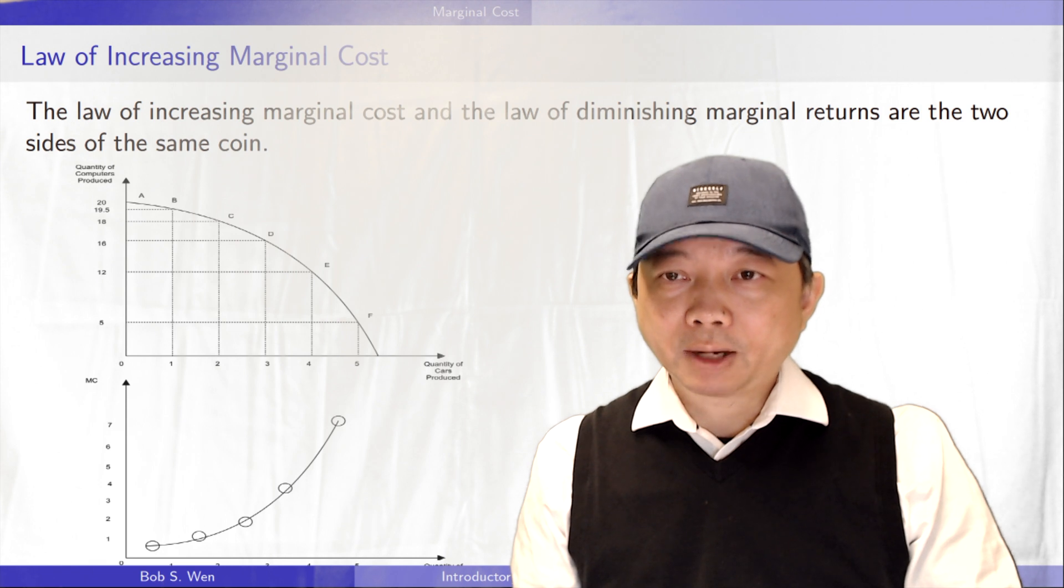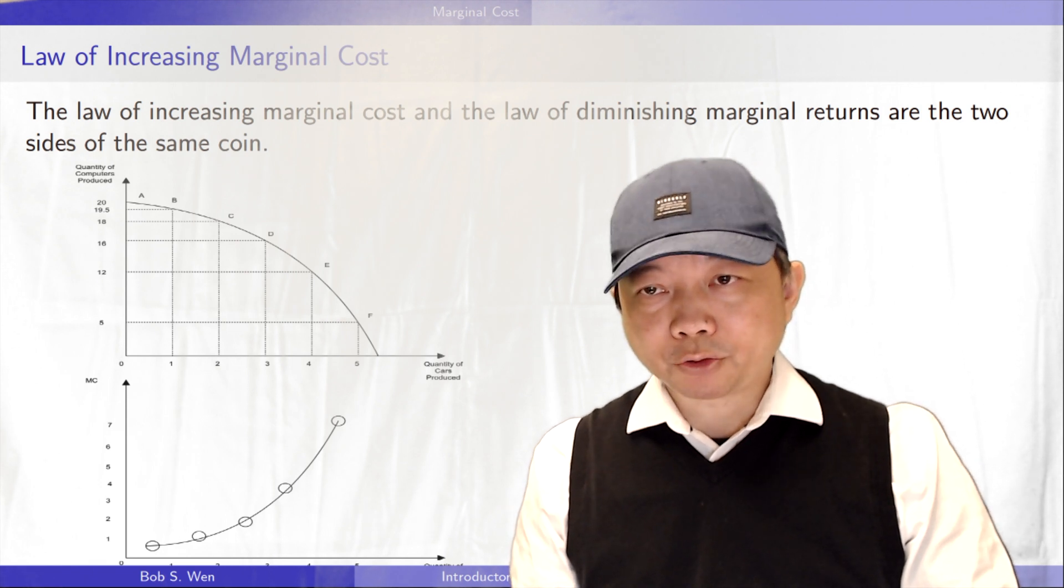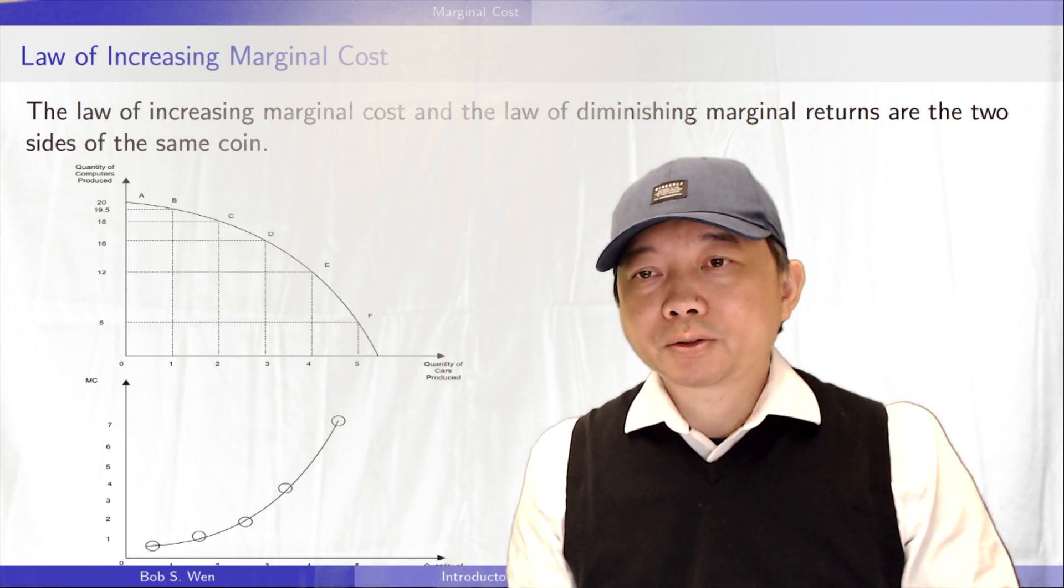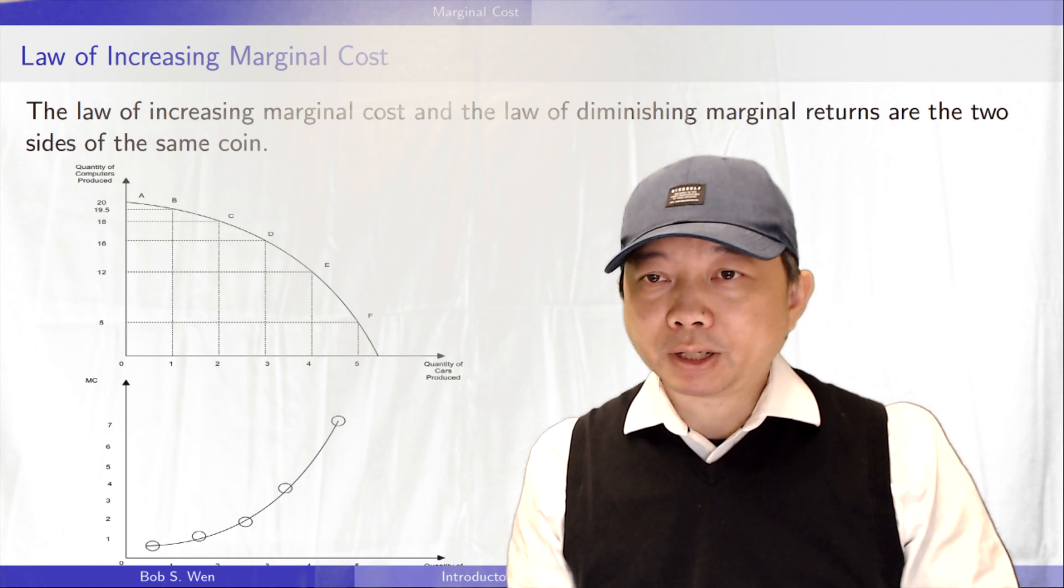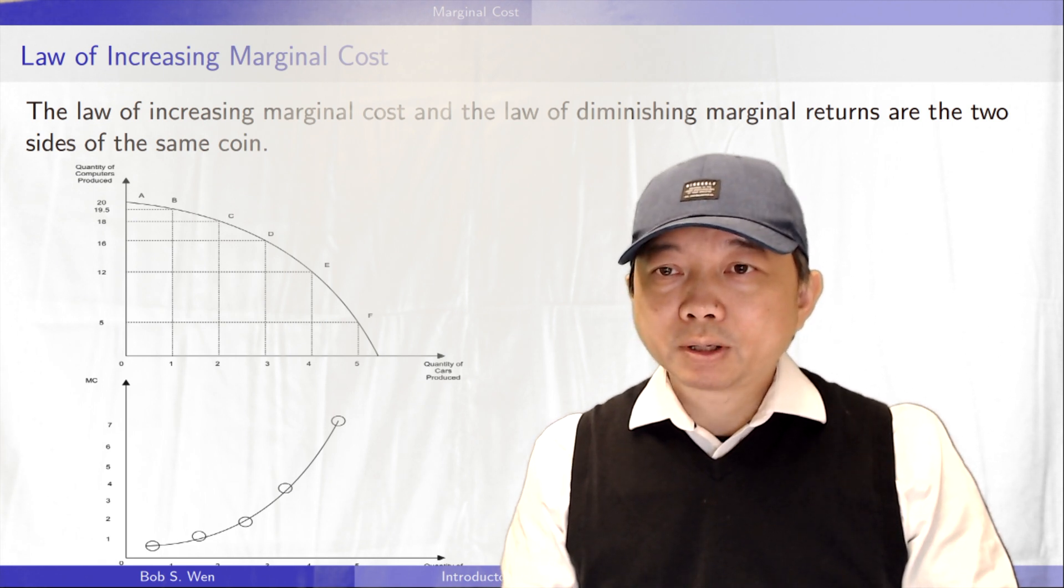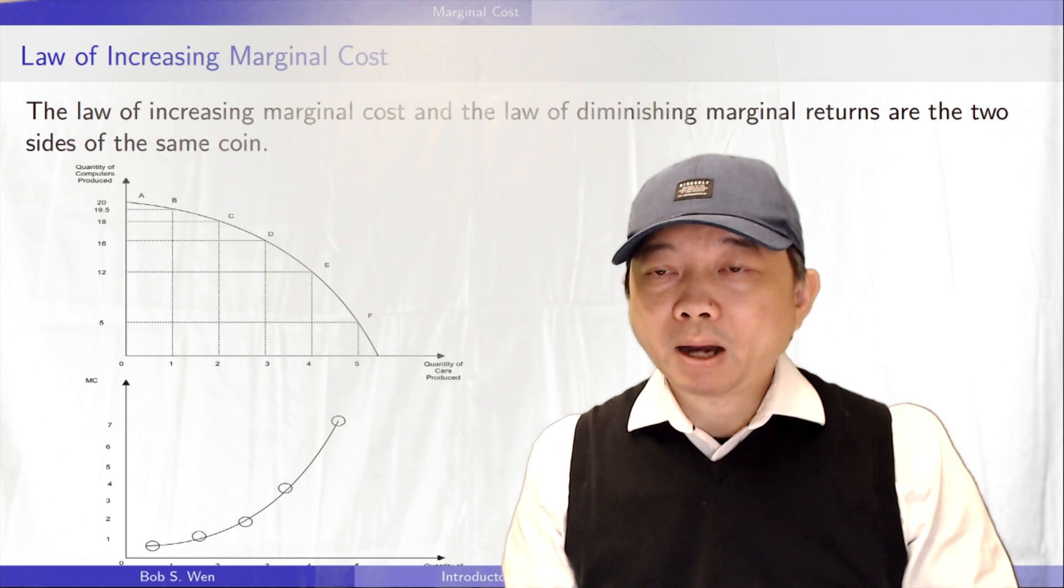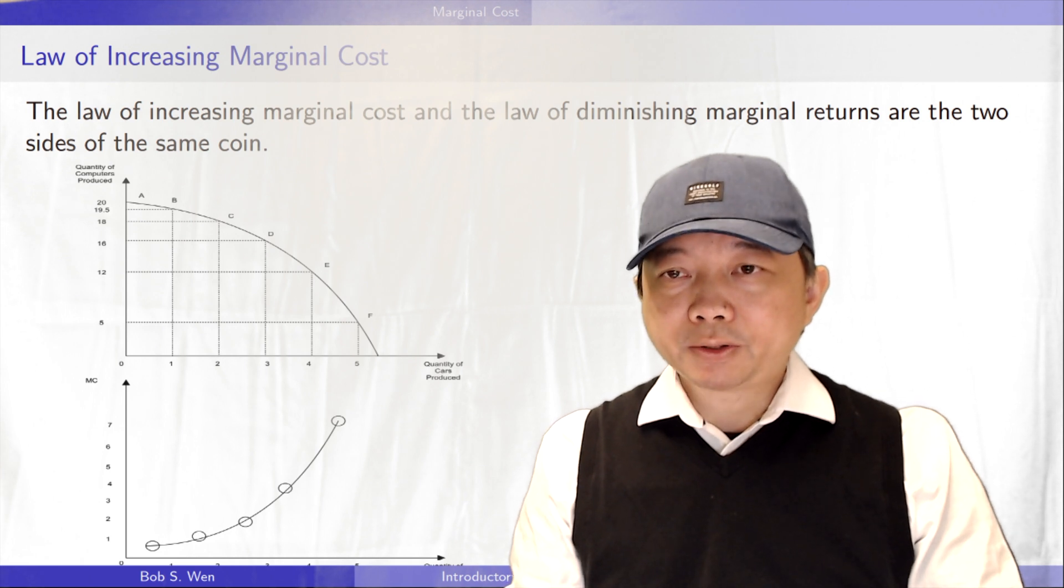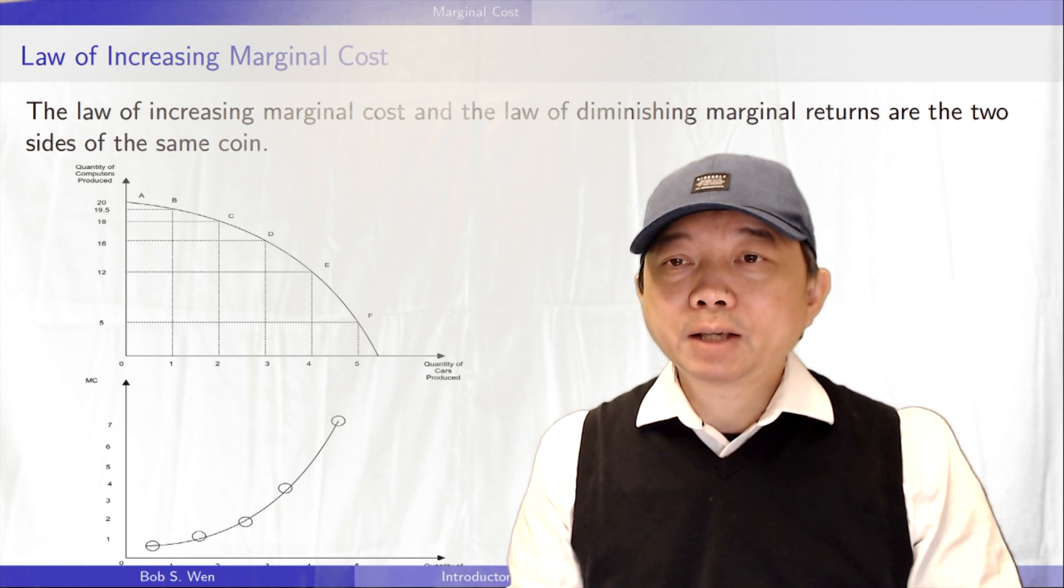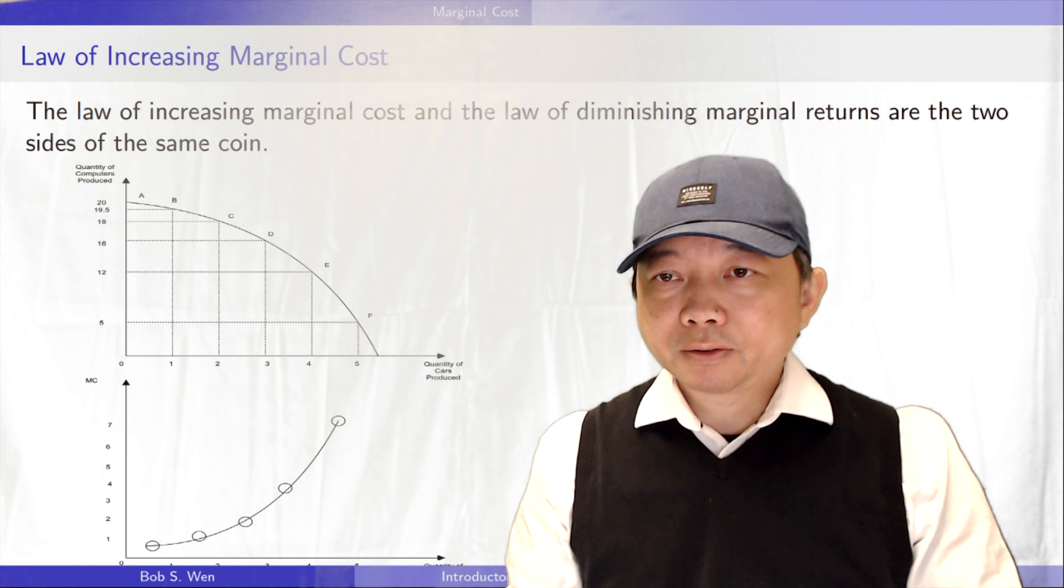As more and more resources like labor shift to the car industry, additional workers have to share equipment and work in more crowded conditions, which leads to diminishing marginal product or returns. The law of increasing marginal cost applies to all goods and services.